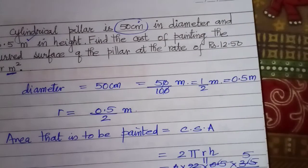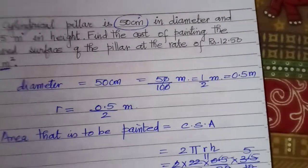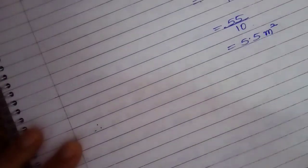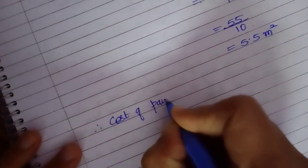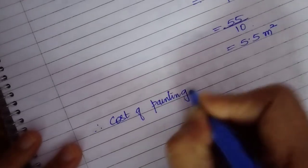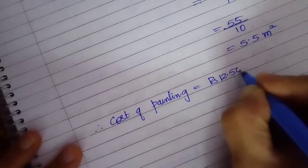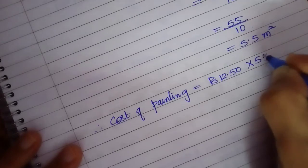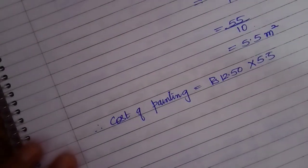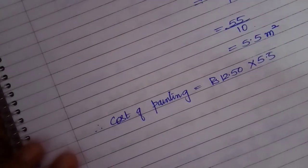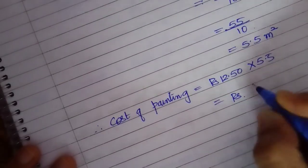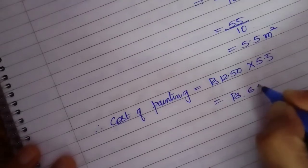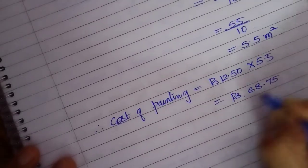What is the cost of painting? Multiply this with rupees 12.50. Therefore, cost of painting is equal to rupees 12.50 into 5.5. That is rupees 68.75. This is the cost of painting that pillar.